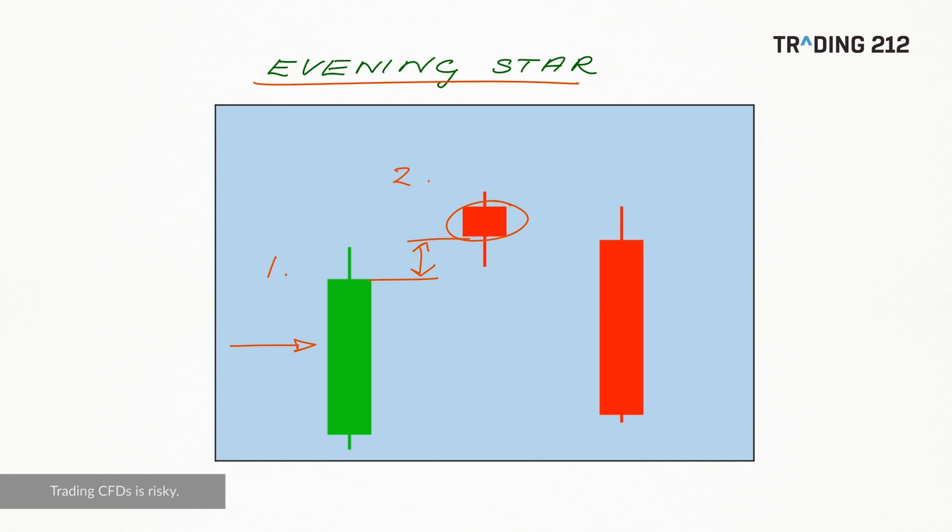And that candle with the small body provides us a warning of a possible top forming. And then the pattern completes with this third candle, which is a long red candle.